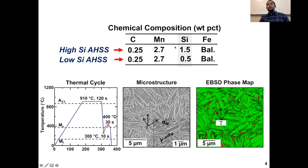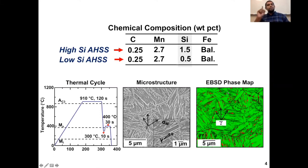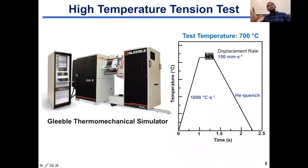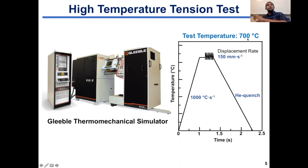We took two zinc-coated advanced high-strength steels: one with a high silicon content and another with a lower silicon content, with carbon and manganese remaining the same. We then quenched and partitioned both steels to develop a similar microstructure containing martensite and austenite. We then performed high-temperature tension tests in a Gleeble thermomechanical simulator using a specific thermomechanical cycle, and I will particularly show you the results from a temperature of 700°C, which is above the zinc melting temperature.